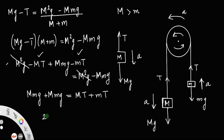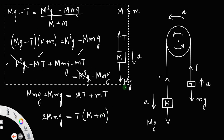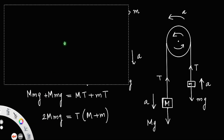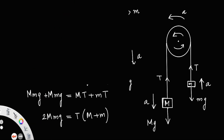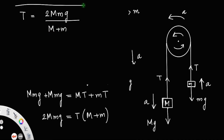So the tension in the string or rope is T equals 2mMg divided by (M plus m). This is the expression for tension in the rope.